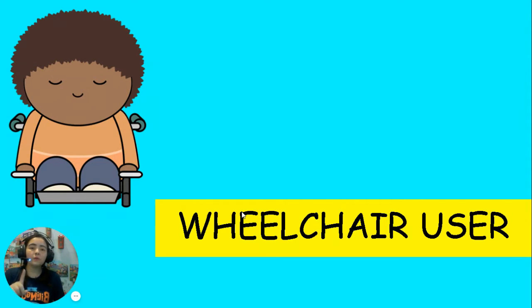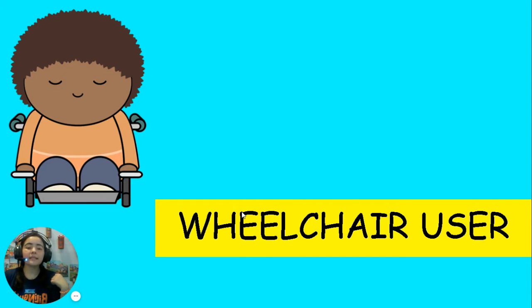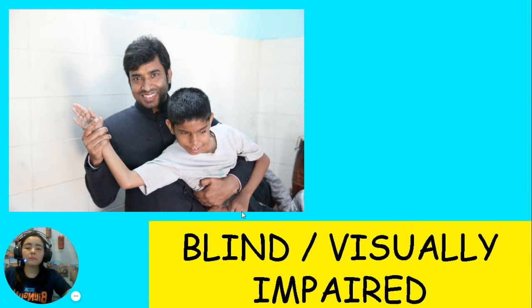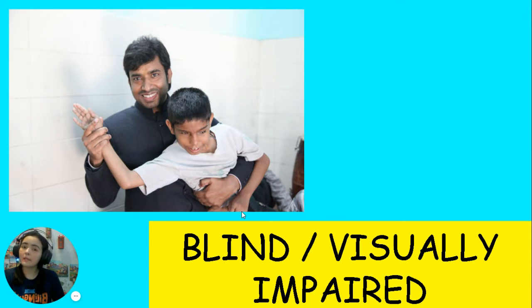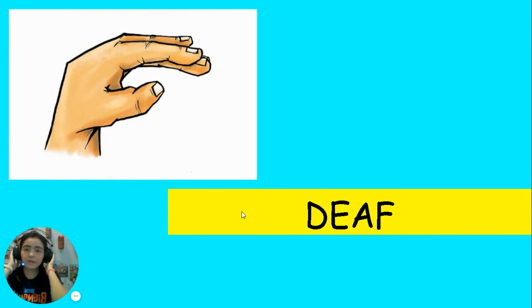The first one: wheelchair user, like the kid from the story that we read last week — wheelchair user, it's a disability. Next one: blind or visually impaired — it's also a disability, you cannot see. Deaf — you cannot hear, you're deaf, so you use sign language.